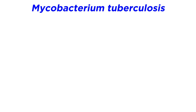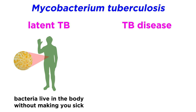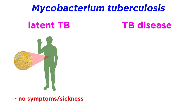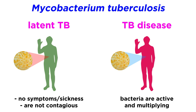There are two types of TB conditions: latent TB and TB disease. A latent infection means that the bacteria live in the body without making a person sick. In the majority of people who breathe in TB and become infected, their body is able to fight off the infection and stop it from growing. Those with a latent infection don't have symptoms, don't feel sick, and most importantly, can't spread TB to anyone else. However, if the bacteria become active and start multiplying in the body, that person will go from having a latent TB infection to being sick with TB disease. Those with TB disease typically do show symptoms and can spread TB bacteria to others.